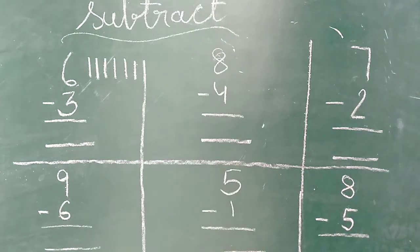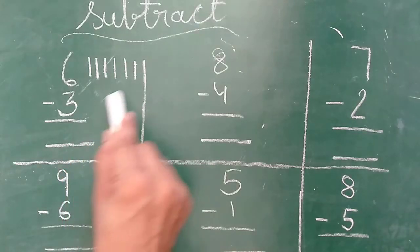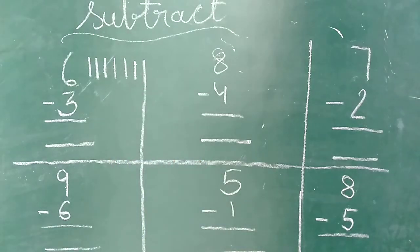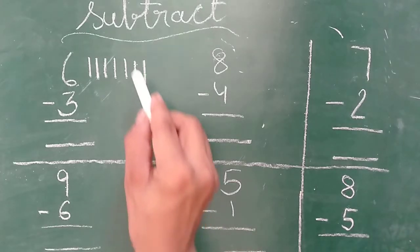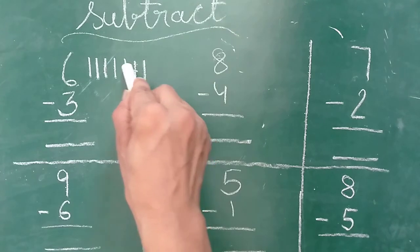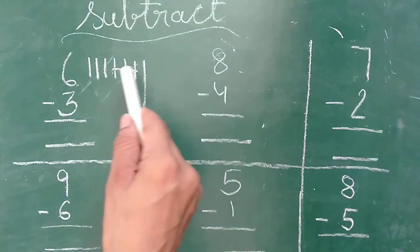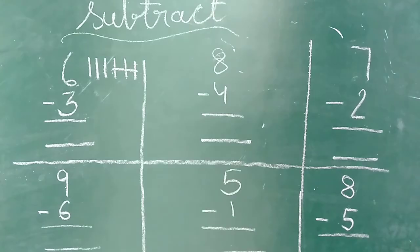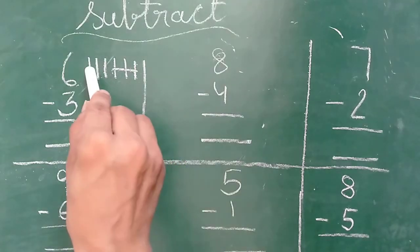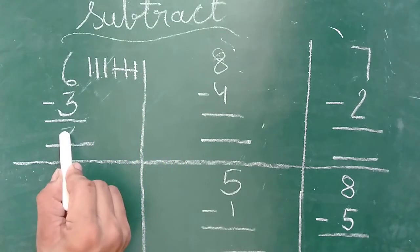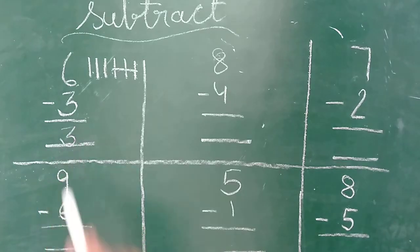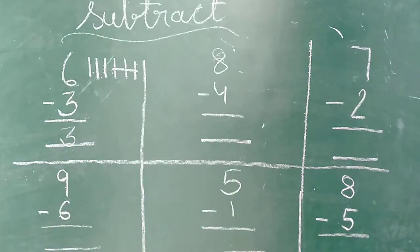Ab kya karenge? Niche walay number ko isme se cross karenge. Toh niche kitna number hai? Three. Toh three cross karenge. One, two, three. Three cross kar diya. How many lines left? One, two, three. Kitni lines bach kai hamare paas? Three. Thik hai? Toh our answer is three.